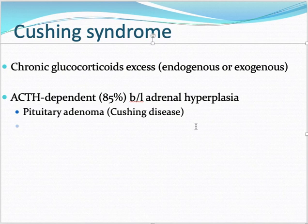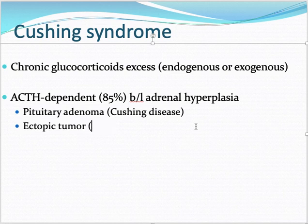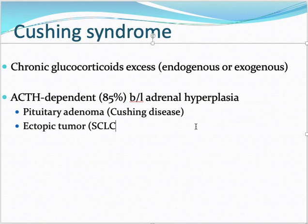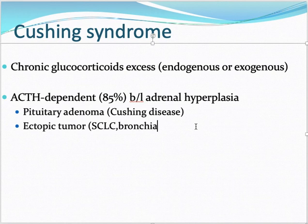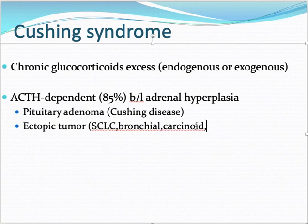Sometimes ACTH can be released from an ectopic tumor — a paraneoplastic type of syndrome. A classic example is small cell lung carcinoma, which releases ACTH, acting on the adrenal gland and resulting in hyperplasia. Other ectopic sources include bronchial carcinoid tumors and medullary thyroid tumors.